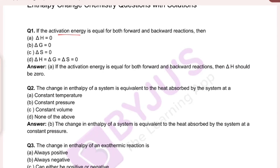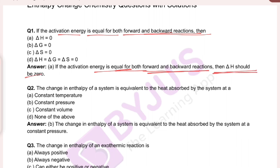First question: if the activation energy is equal for both forward and backward reactions, then delta H should be zero. Delta H is the amount of heat absorbed or released in a reaction at constant temperature and pressure.